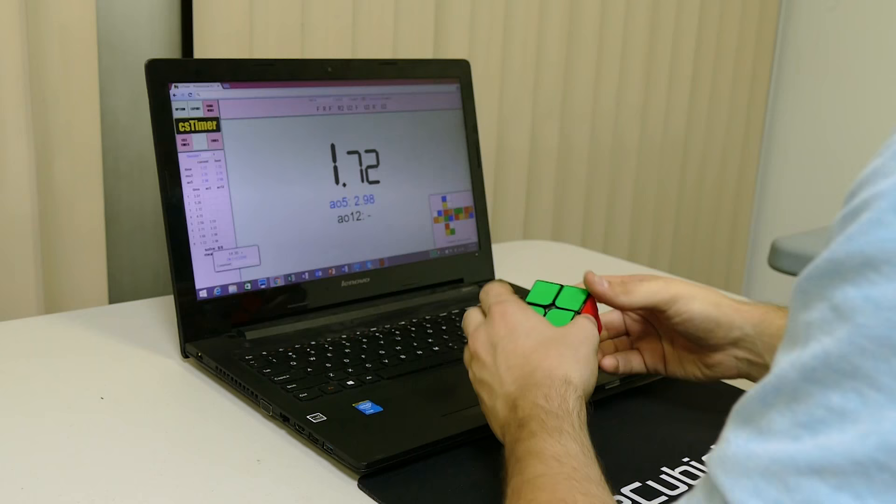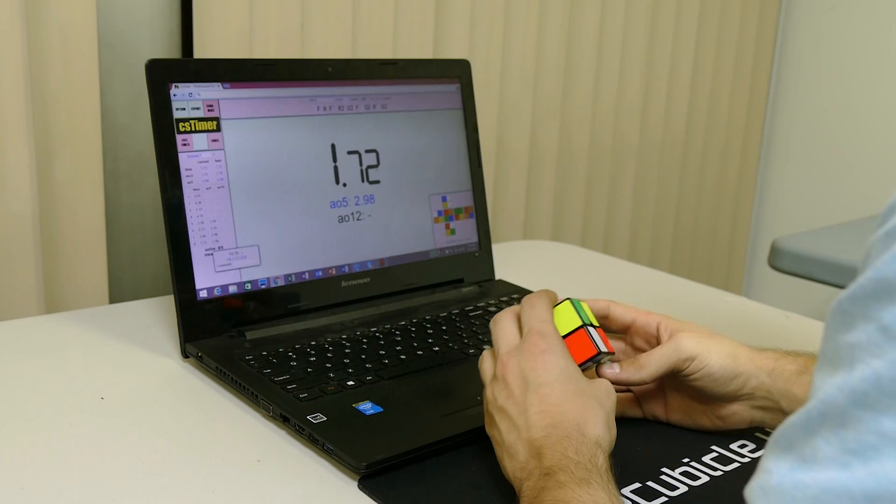For our setup, we first tried Traxxas 50k, which was okay. I can control the cube just fine, but I definitely couldn't turn as fast as I normally do, resulting in slightly slower times.